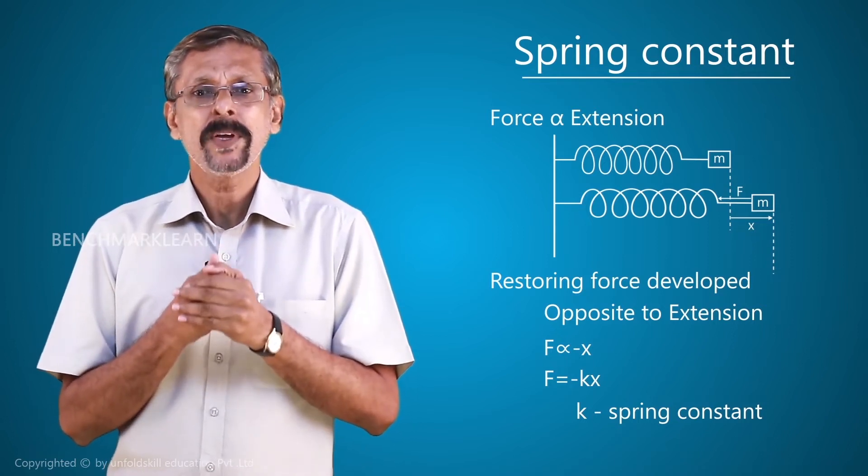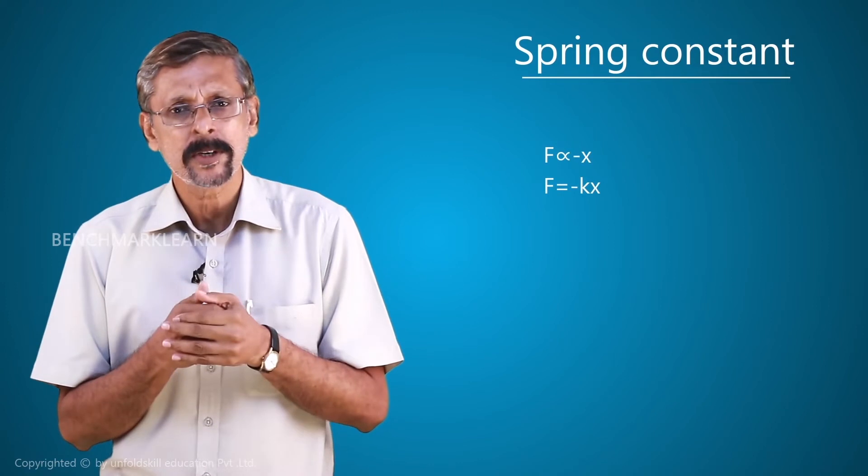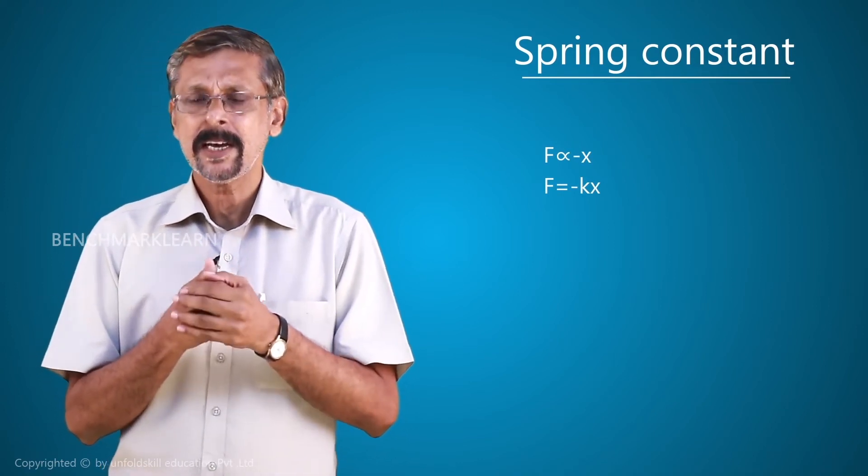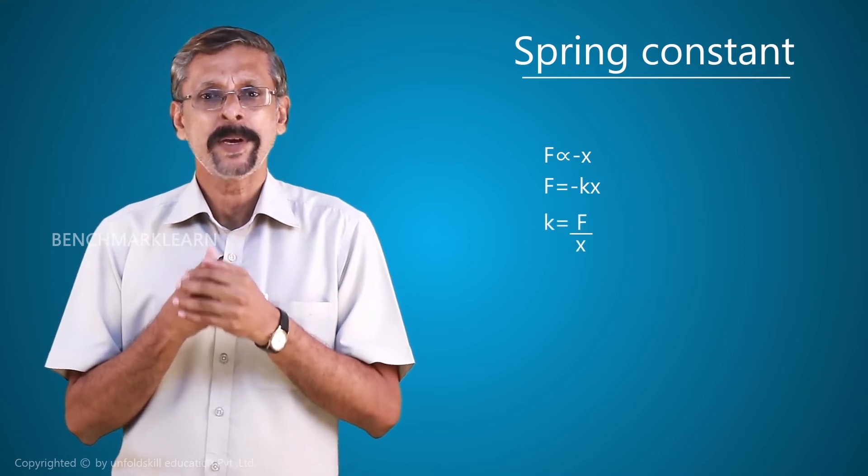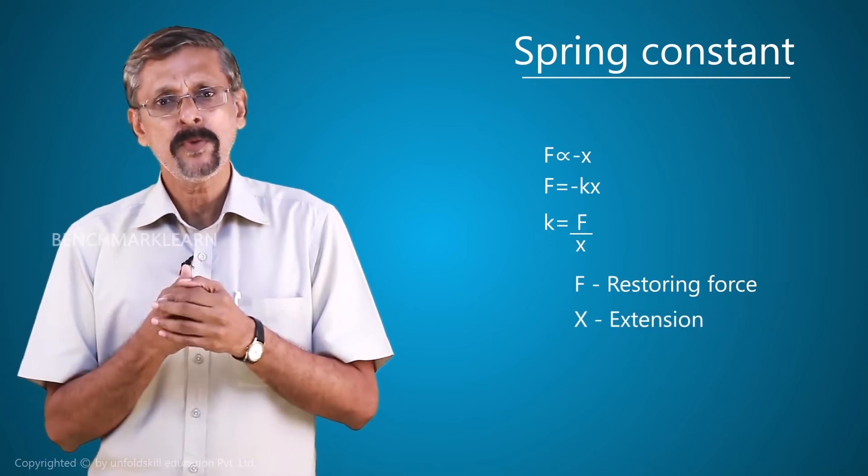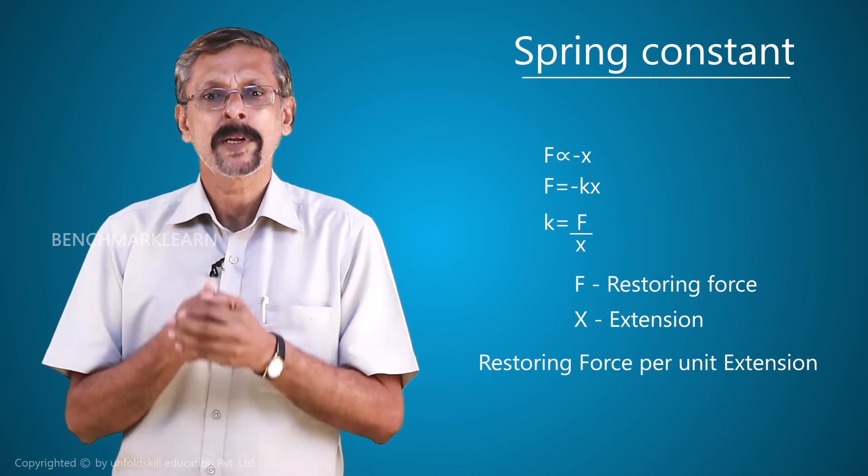Now we have an equation F equal to minus kx. K is what is known as the spring constant. And how do you define the spring constant? From this equation itself, you can define it. You can see that k is equal to F by x, where F is the restoring force and x is the extension. So the restoring force per unit extension is what is known as the spring constant.